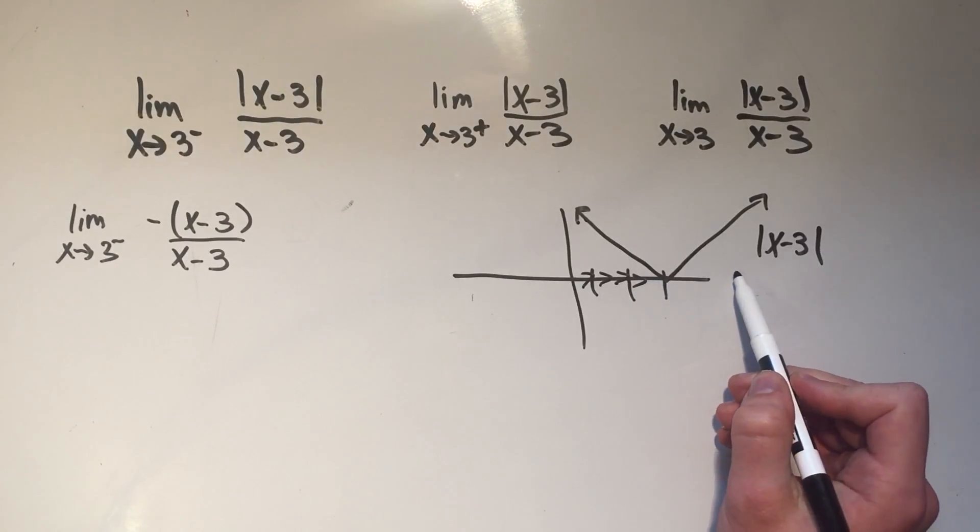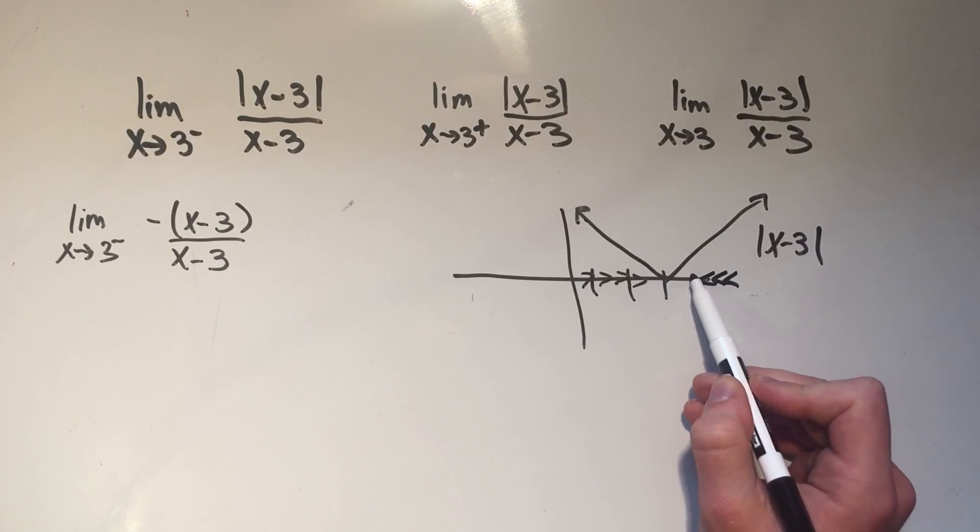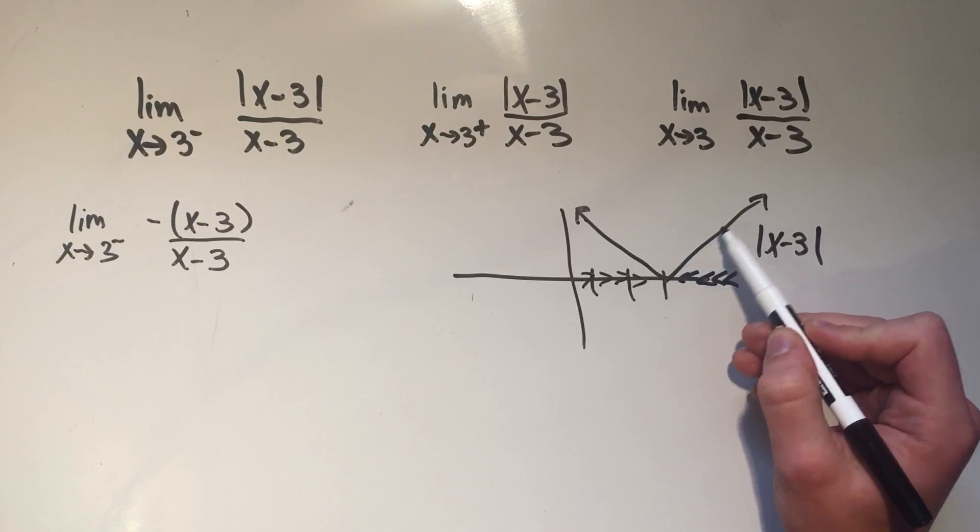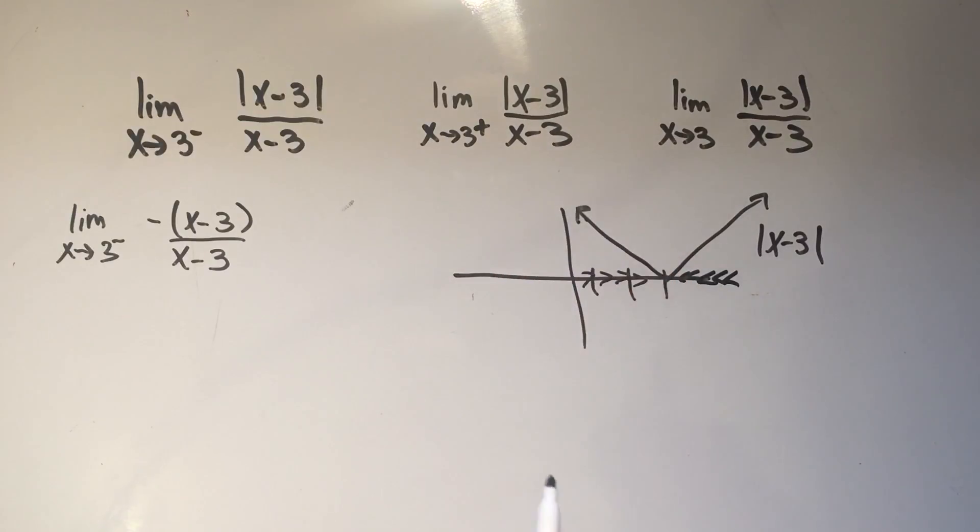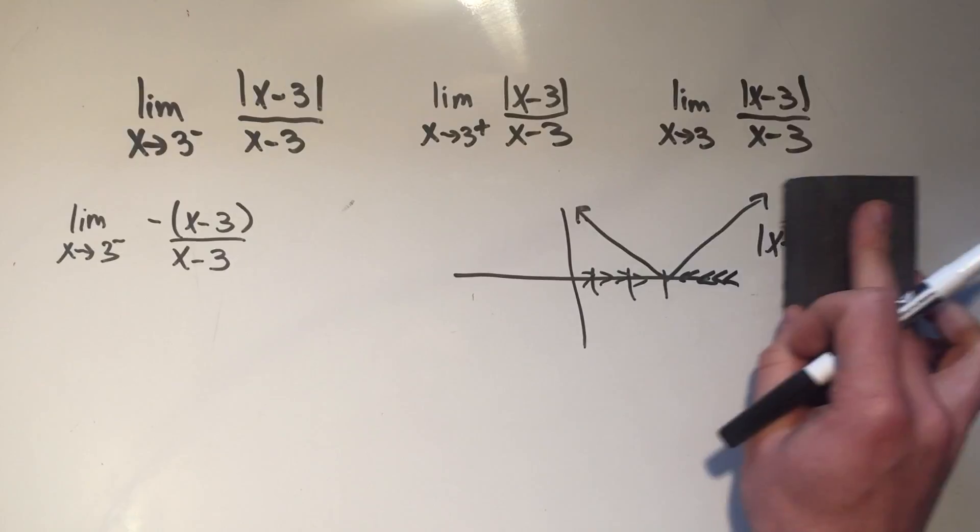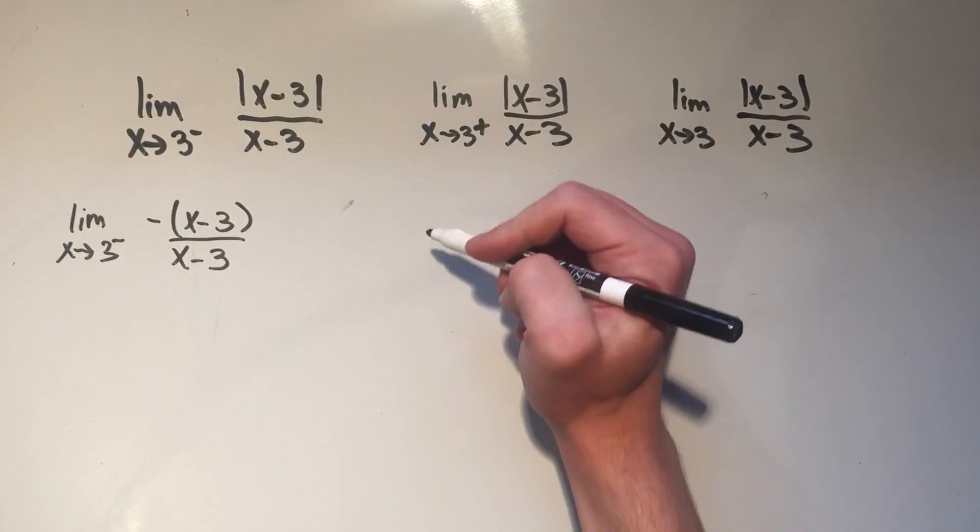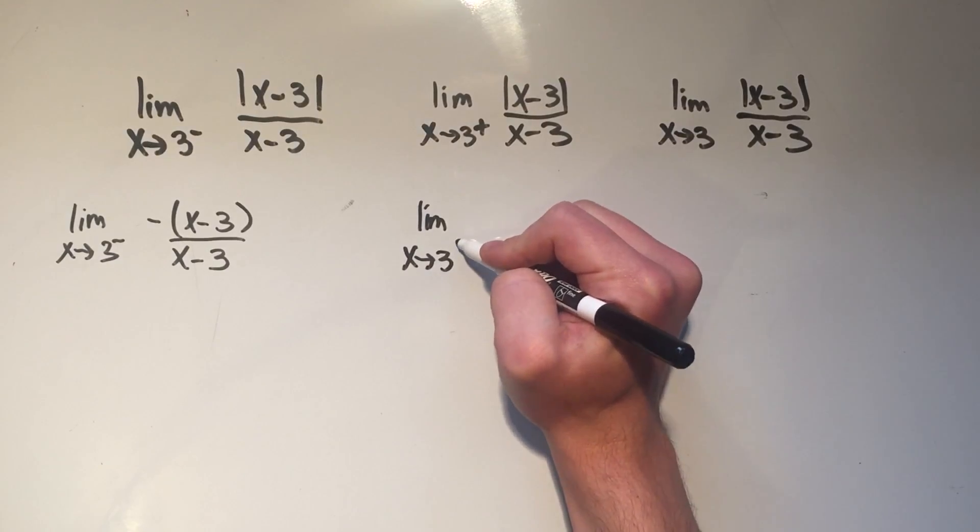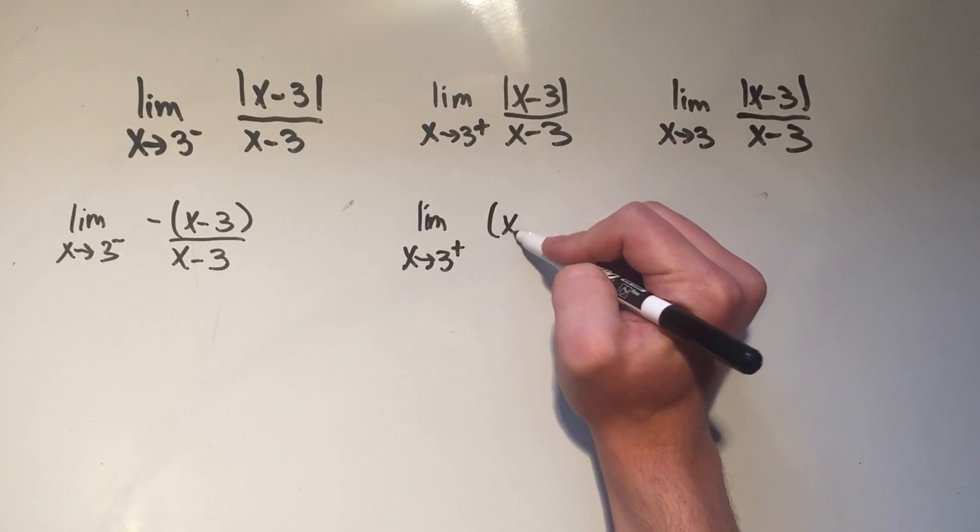But if I'm approaching three from the right-hand side, I'm moving along the positively sloped part. So I want my absolute value to be positive, which means for the second limit, I'm just going to replace the absolute value sign with regular parentheses.